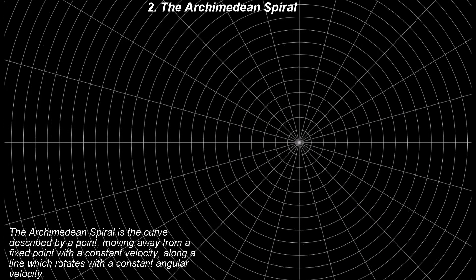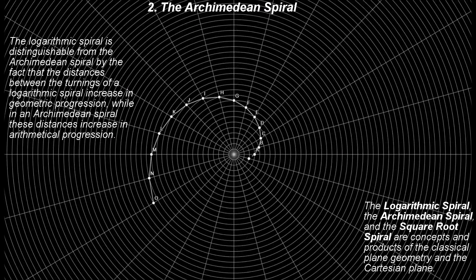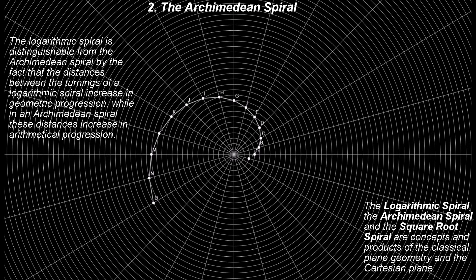2. The other well-known spiral we need to mention now is the Archimedean spiral, also known as the arithmetic spiral. This spiral is the curve described by a point moving away from a fixed point with a constant velocity along a line which rotates with a constant angular velocity. The logarithmic spiral is distinguishable from the Archimedean spiral by the fact that the distances between the turnings of a logarithmic spiral increase in geometrical progression, while in an Archimedean spiral these distances increase in arithmetical progression.